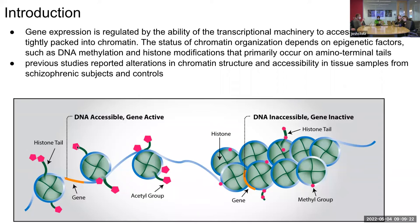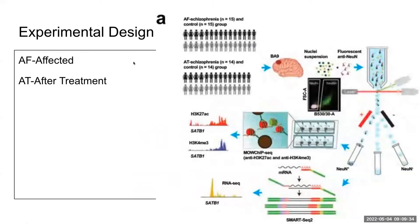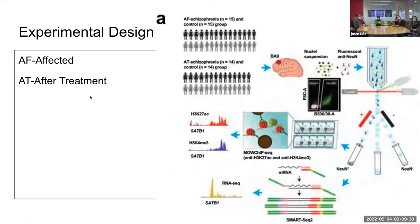In the case of methylation, histone tails tend to cluster together, and in the case of acetylation they tend to repel and open up the group. Broadly speaking: acetylation is associated with the up-regulation of a gene and methylation is associated with the down-regulation of a gene.